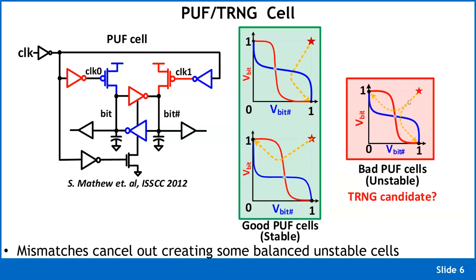These cells are bad PUF cells but good TRNG cells — you get dynamic entropy out of them. Every cycle you are effectively sampling thermal noise on bit and bit-bar and converting it to a one or zero. This is the foundation of a TRNG cell.